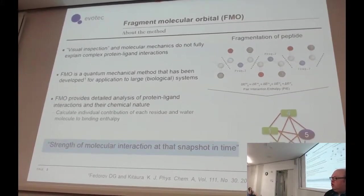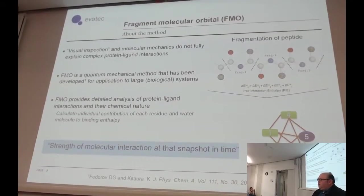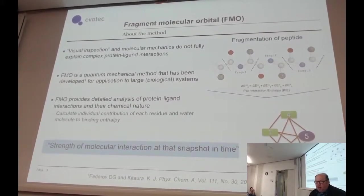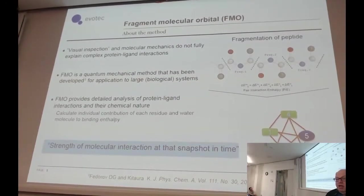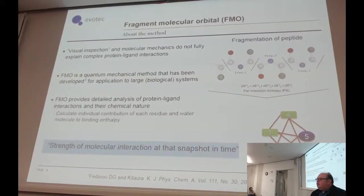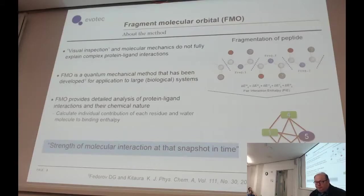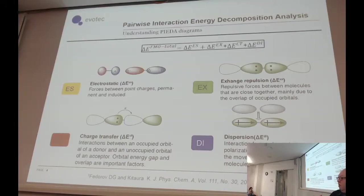Then we perform the calculation. This allows us to decrease the dimensionality of the problem from N³ to N¹, and this is what adds speed. This method is also parallelized, which adds additional speed. It's still not very quick in absolute terms, but it takes a couple of hours per system. For about 32 CPUs, it will take about 2 hours to calculate protein-ligand interaction per system. What you receive is interaction energy between your ligand and actually every fragment with every fragment, though we're more interested in the interaction between the ligand and the protein.